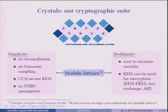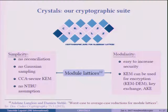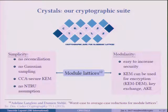We will focus on two main things for this cryptographic suite: simplicity and modularity. We want to avoid reconciliation. We want to avoid Gaussian sampling — we were speaking about avoiding the complexity of implementation so that people are not likely to make mistakes. We want to avoid the NTRU assumption. We want to provide CCA security from the start. And we want something where, if you want another level of security, it should be easy to get — you shouldn't need to re-implement everything. We can get that from modules.